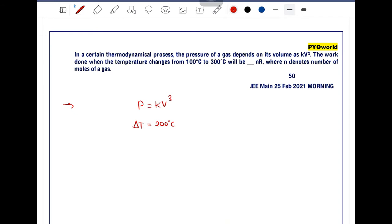We have the formula for work: W = ∫P dV. Now, if we use the given equation P = kV³ with respect to V...